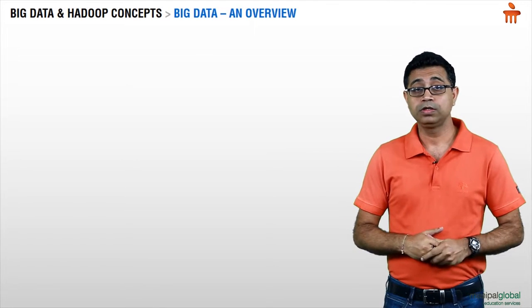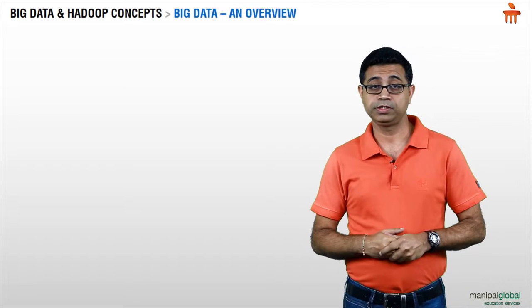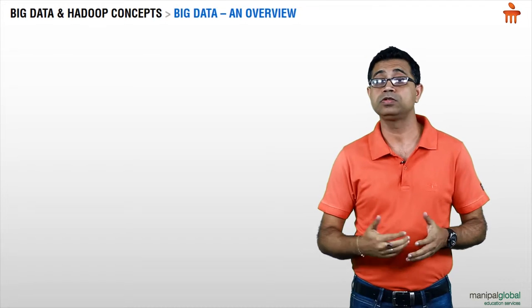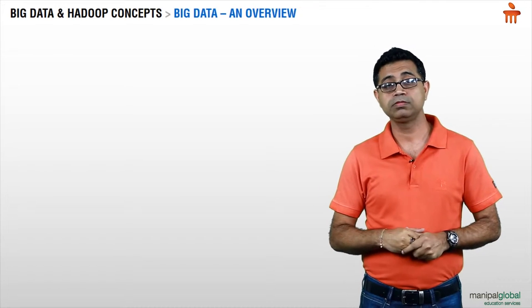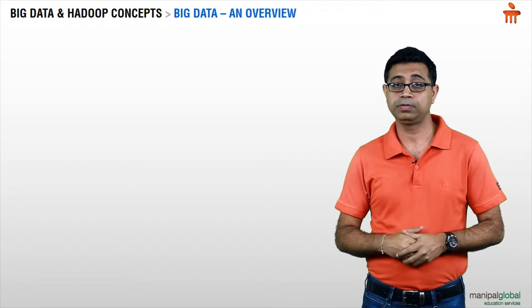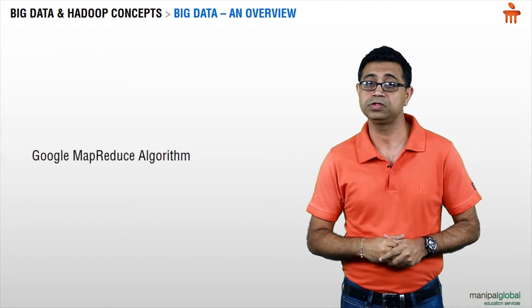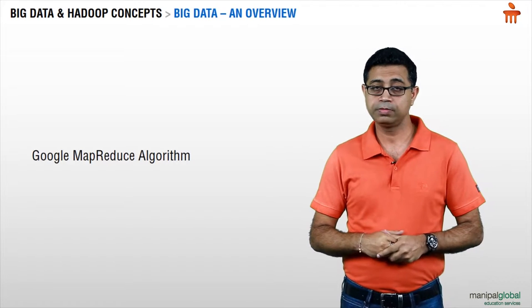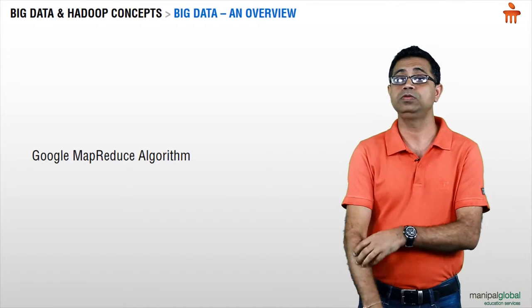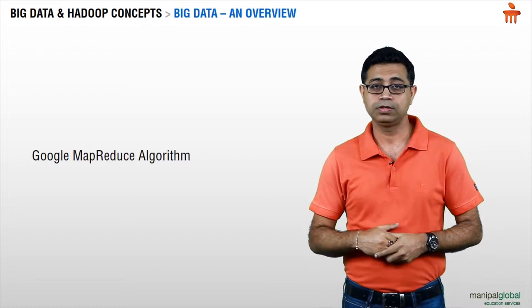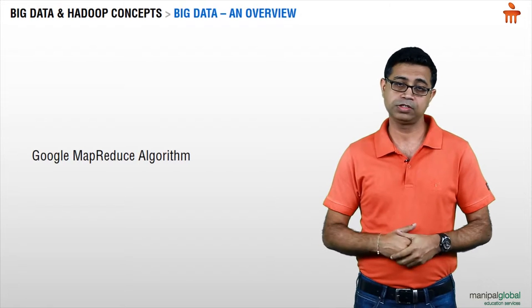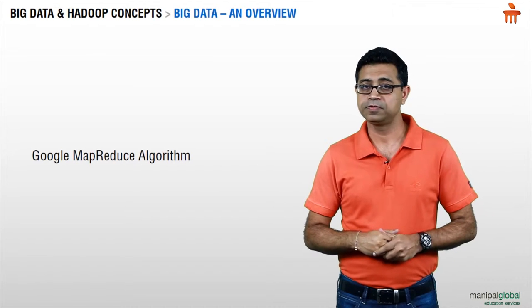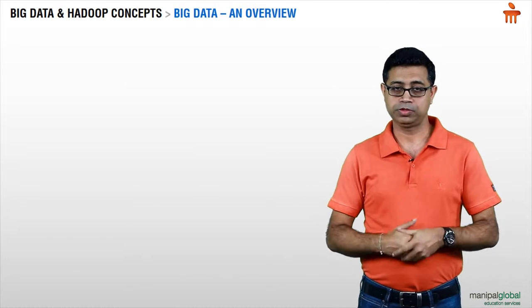Back to Google — Google had solved the problem of saving the data. Now it wanted to do something more: analytics on top of it. That's when Google wrote another white paper called the Google MapReduce algorithm. Again, Doug Cutting and Yahoo had a look at that paper and implemented it into their own solution. It went back to the production environment, and then Yahoo donated it to Apache as a full-fledged project. That's how Hadoop came into the picture.